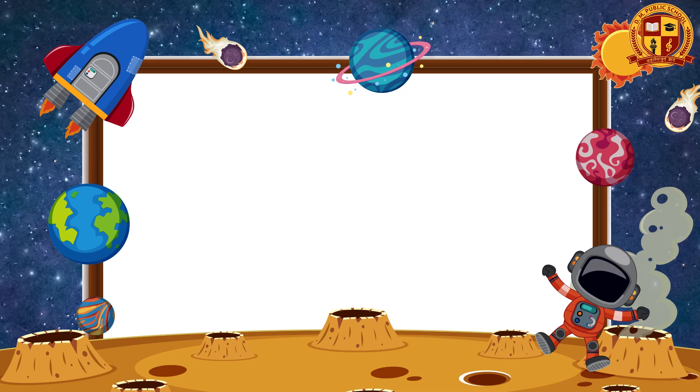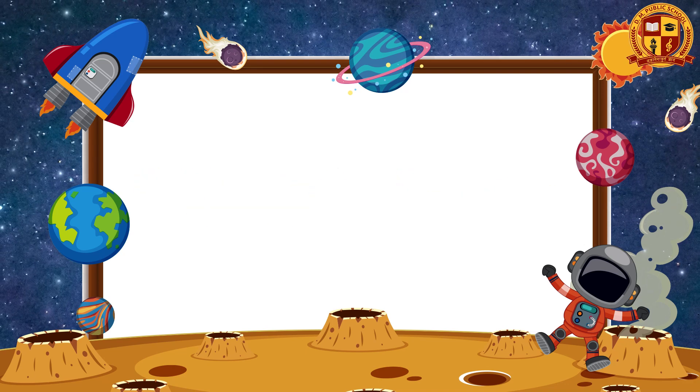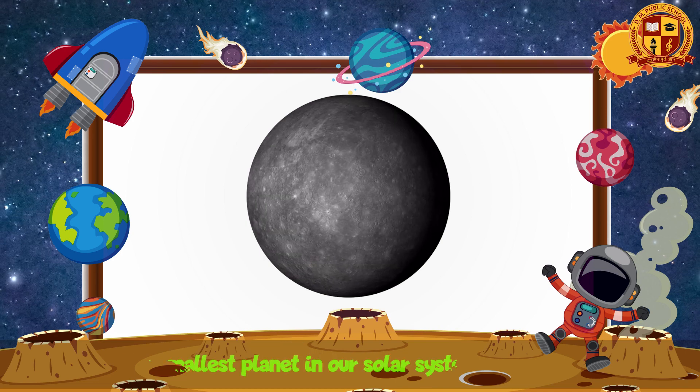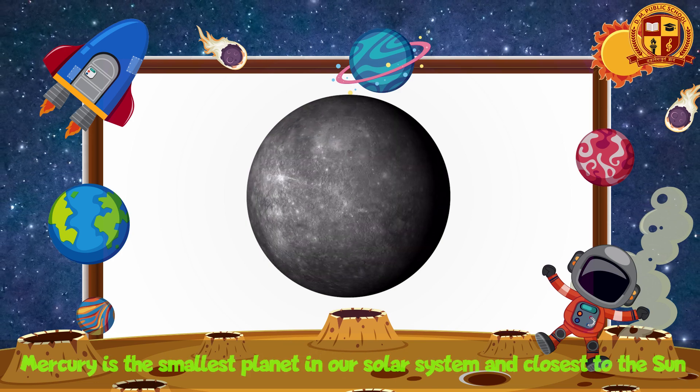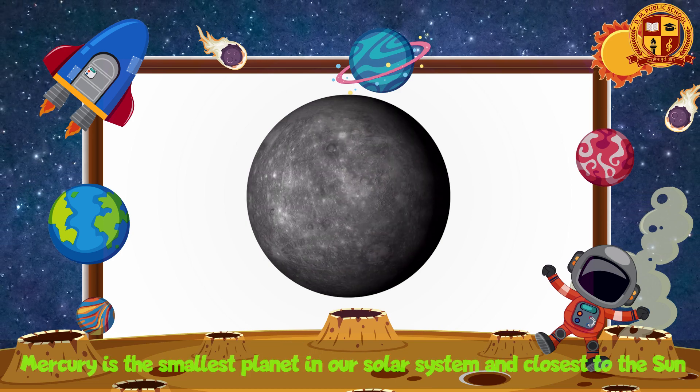Learn Solar System Planet Names. Mercury is the smallest planet in our solar system and closest to the sun.